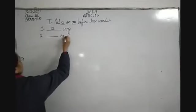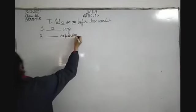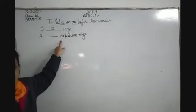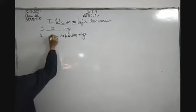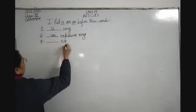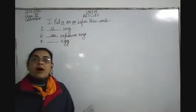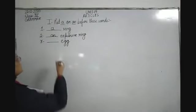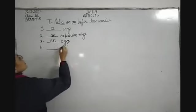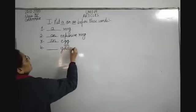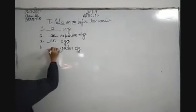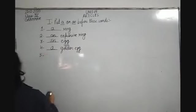The second one: dash expensive ring. The word expensive starts with E which is a vowel and has a vowel sound, so we use AN — an expensive ring. Third: dash egg. Egg starts with E, a vowel, and has a vowel sound — so AN egg. Fourth: dash golden egg. Golden starts with a consonant G and has a consonant sound — so A golden egg.